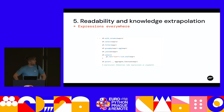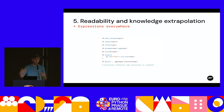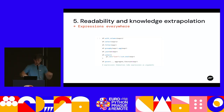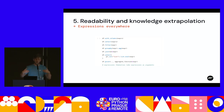The final thing is readability and knowledge extrapolation. If you learn the Polars expressions — those composable building blocks — you can use them anywhere in the API: in with_columns, in select, in a filter, in a group-by. You can group by an expression, do a multiplication in the group-by itself. You can use them in aggregations, joins, list elements, pivot aggregations, and of course in expressions themselves. If you understand the expression API, you understand the whole of Polars.